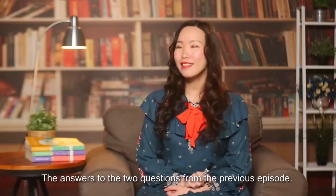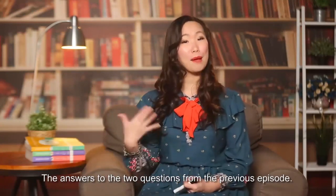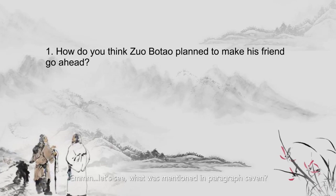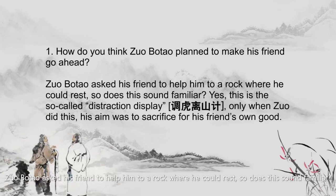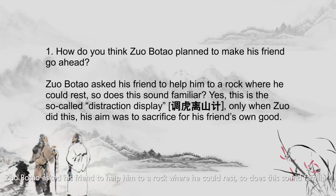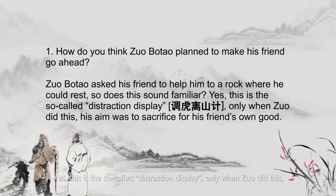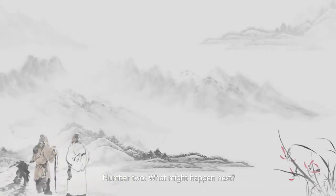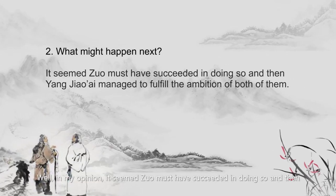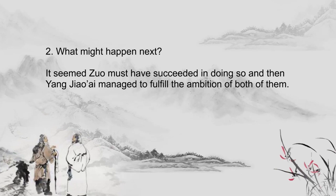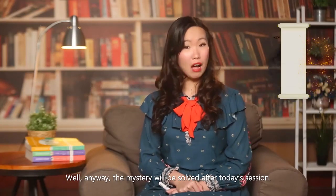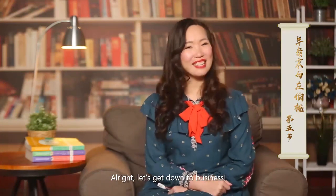First, pay back what you owed me — the answers to the two questions from the previous episode. Number one: how did Zuo Botao plan to make his friends go ahead? In paragraph 7, Zuo Botao asked his friend to help him to a rock where he could rest. This is the so-called distraction display. His aim was to sacrifice for his friend's own good. Number two: what might happen next? It seemed Zuo Botao succeeded, and Yang Jiao Ai managed to fulfill the ambition of both of them. The mystery will be solved after today's session.